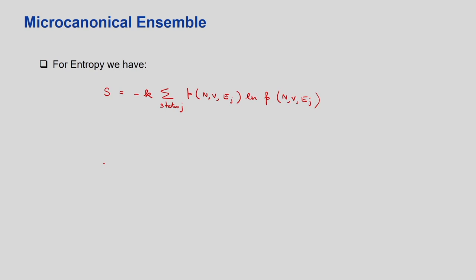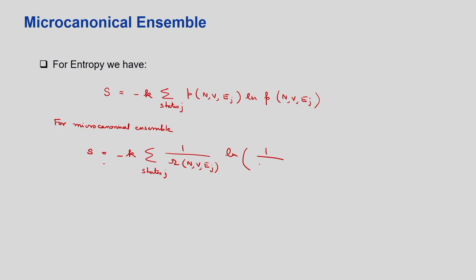For the micro canonical ensemble, we replace the probability with degeneracy. You get S = −k times the summation over all states j of (1/Ω(N,V,Ej)) times ln(1/Ω(N,V,Ej)). This means I have just replaced the probability with the degeneracy expression.